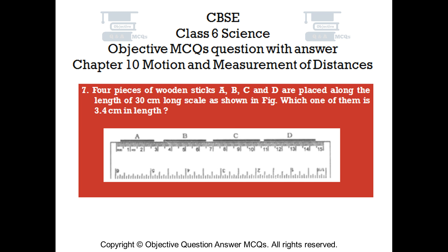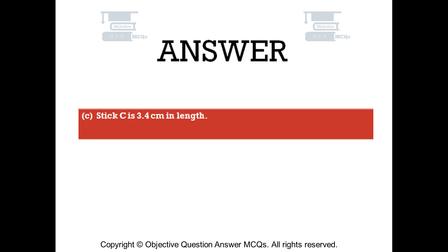Question number 7. Four pieces of wooden sticks A, B, C and D are placed along the length of a 30 centimetre long scale as shown in the figure. Which one of them is 3.4 centimetres in length? Option A; Option B; Option C; Option D. The right answer is Option C. Stick C is 3.4 centimetres in length.